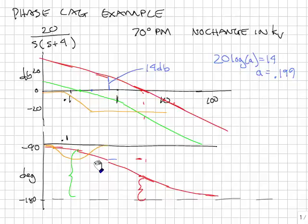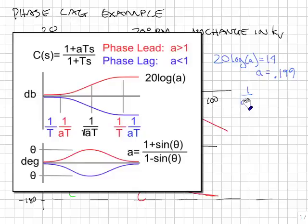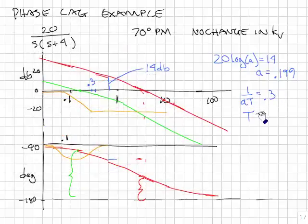So I'm going to pick that the phase lag should end here at about 0.3. That means that 1 over AT should be equal to 0.3. T is equal to 16.6, and 1 over T is 0.05. And that's all the parameters I need.